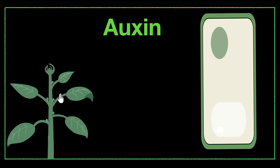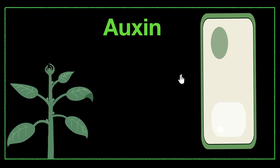So what happens because of this? If you look at a plant, auxin, since it's a growth hormone, is found in the growing regions of the plant. The growing regions would usually be the tip of the leaves, the tip of the shoot, the buds. That's where auxin is found in abundance, very concentrated. So if it causes the cells to elongate at the tip of the shoot, the tip will start growing taller.